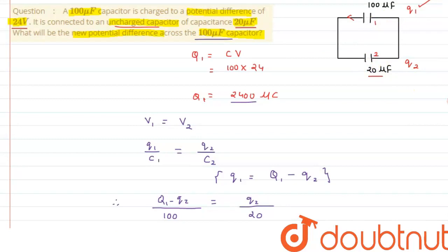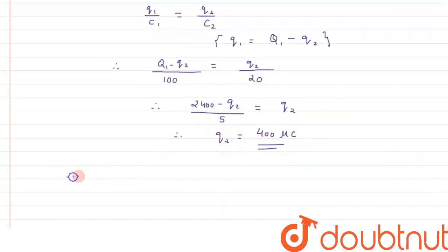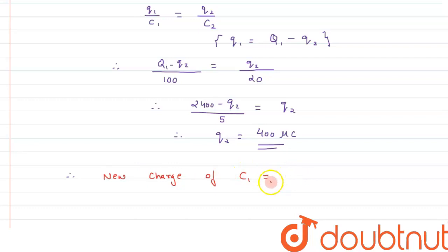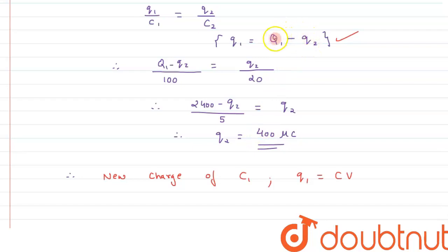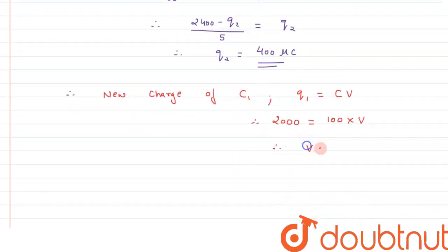After the charge transfer, the new charge on capacitor one equals 2400 minus 400, which is 2000 microcoulombs. Using Q = CV, we have 2000 = 100 × V, so the new potential difference V comes out to be 20 volts.